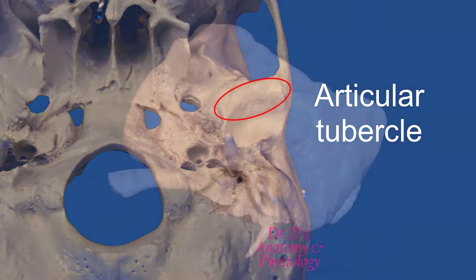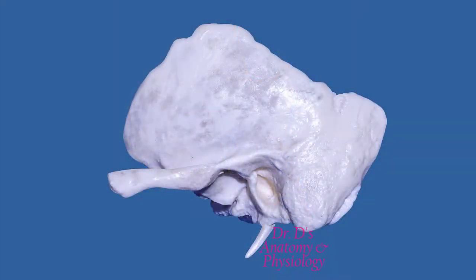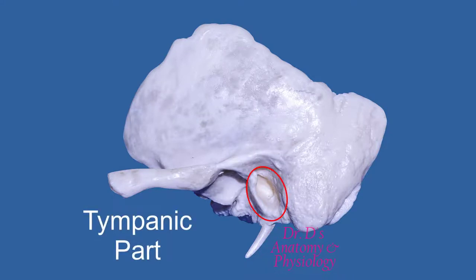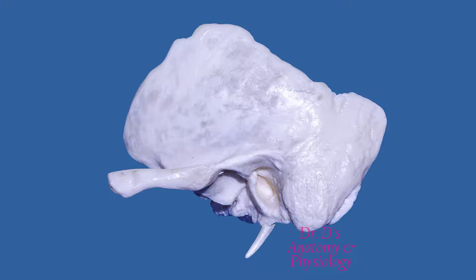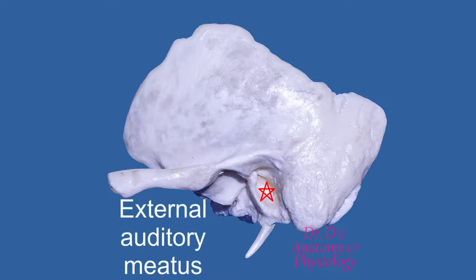Immediately posterior and lateral to the zygomatic process, you'll find the tympanic part of the temporal bone. This part is basically going to form the wall of the external ear canal, the external auditory meatus. It's a relatively small part, but it is an important part because it is associated with your sense of hearing.